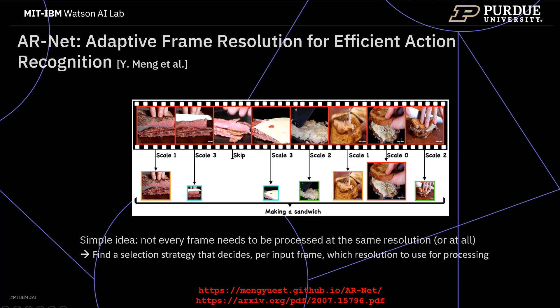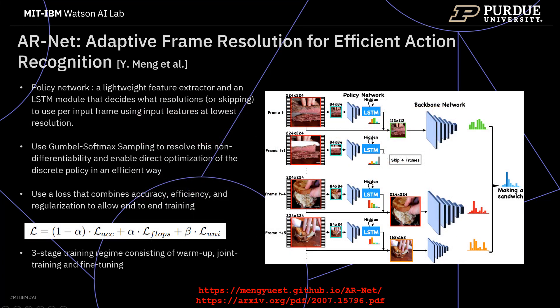Let's start with ARNet. ARNet, our Adaptive Resolution Network, selects on the fly the optimal resolution for each frame conditioned on the input for efficient action recognition in long untrimmed videos. Rather than processing all frames at the same resolution, it learns a policy to select the optimal resolution or even skip a frame that is needed to correctly recognize an action in a given video. As can be seen from the figure, the seventh frame is the most useful for recognition. Therefore, it will be processed with the highest resolution, while the rest of the frames could be processed at lower resolutions or even be skipped without losing any accuracy. ARNet consists of a policy network and different backbone networks corresponding to different resolutions. The policy network decides what resolution to use on a per-frame basis or to skip the frame to achieve accuracy and efficiency.